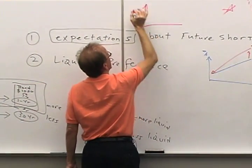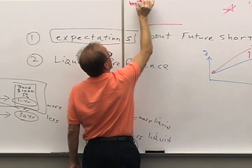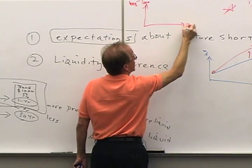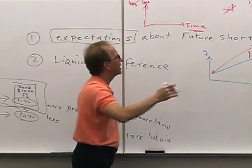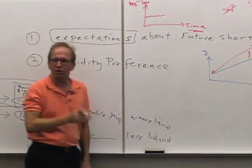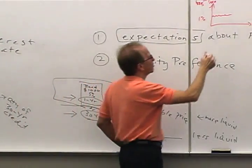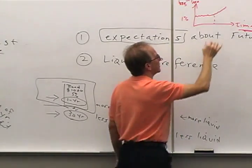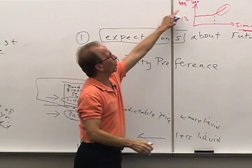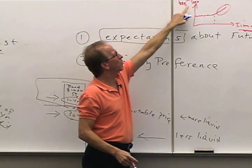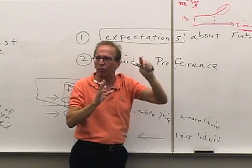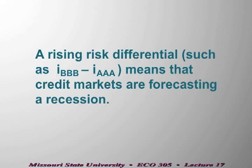We've discussed two signals: the interest rate differential between Triple-B and Triple-A bonds, and the slope of the yield curve. If the Triple-B minus Triple-A spread is rising, that signals people worry those companies may go bankrupt in a recession. If the yield curve is negatively sloped, that's also signaling recession from credit markets. Both serve as leading indicators of economic conditions.